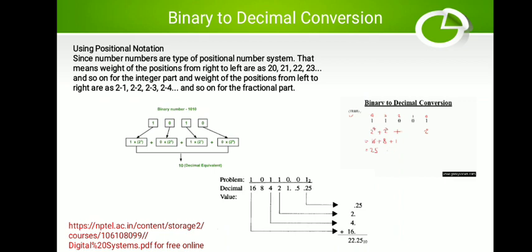Each binary position has a weight that is a power of 2, increasing from right to left, as studied in the previous lecture. Each positional weight is multiplied by its power of 2 from LSB to MSB, then we sum up those positional values multiplied by their symbols. We only consider positions whose symbol is 1, since 0 multiplied by anything is 0. Adding those positional values gives us the equivalent decimal number.